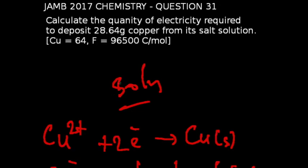Question 31 of the JAMB 2017 chemistry exams. Calculate the quantity of electricity required to deposit 28.64 gram copper from its salt solution.